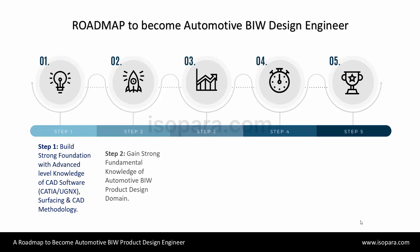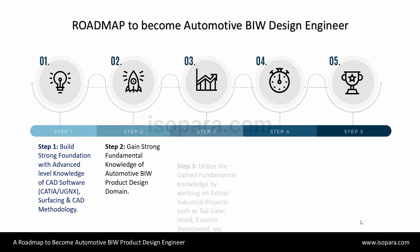In Step 2, you have to understand and gain fundamental knowledge of the automotive BIW product design domain. You have to understand what are the inside key parameters used during BIW development. Here you have to learn about materials — what are the different materials used for BIW parts, their thicknesses, their strength criteria for development, and what are the DFA, DFM, and DFS for BIW parts.